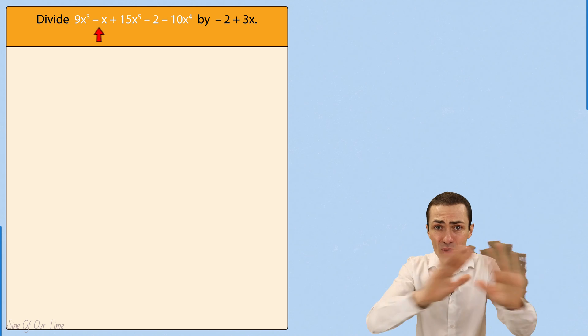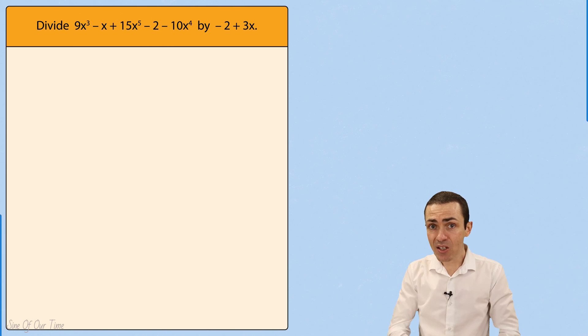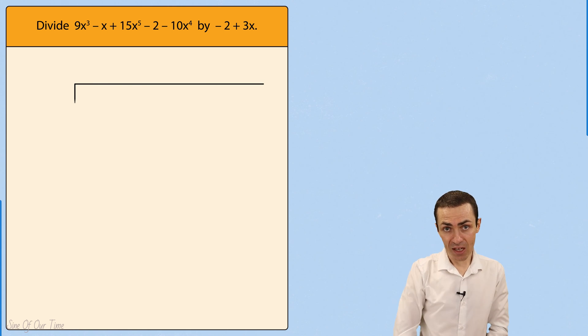We notice that there is no order to the terms in the dividend, which means that when we write these terms under the long division symbol, we should write them in descending powers of x.